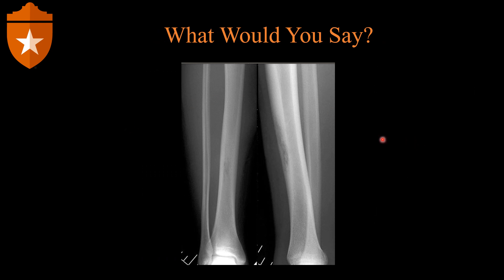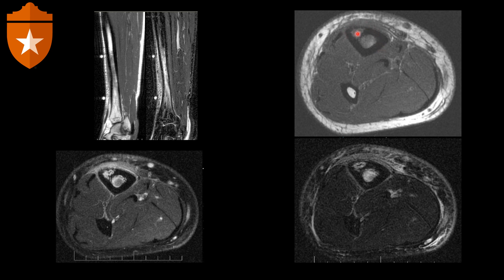What would you say about this radiograph? We have AP and lateral views of the leg showing an ill-defined lesion within the anterior cortex of the tibial diaphysis. You can't trace a pencil around this lesion because the zone of transition is wide, with a permeative pattern — indicating an aggressive, vascular lesion. On MRI, there is an intracortical lesion with peripheral enhancement extending into the soft tissues. This ended up being intraosseous osteomyelitis — non-malignant but aggressive due to increased vascularity, with no bone production at all.